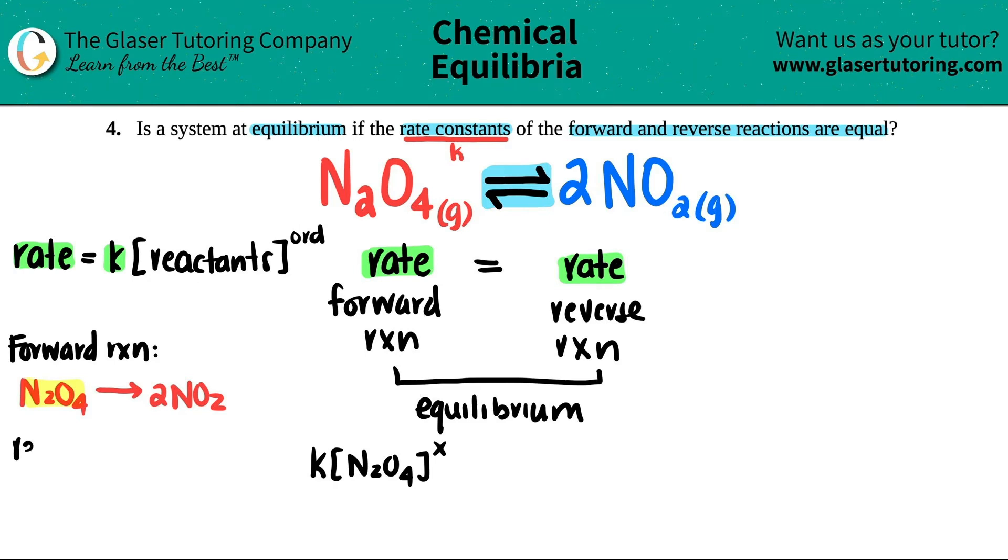Now for the reverse reaction, which is the opposite way, the reactant would be 2NO2. You're going backwards, and you would produce N2O4, which is now your reactant. So this would equal K times the reactants of NO2 raised to some order. Can I say that it's 2? Not really - I don't know if this happens in one step or not, but that's not the point.